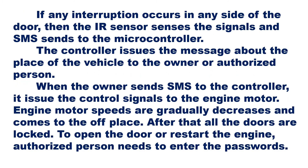If any interruption occurs at any side of the door, the IR sensor senses the signals and sends an SMS to the microcontroller. The controller then issues a message about the place of the vehicle to the owner. When the owner sends an SMS to the controller, it issues the control signal to the engine motor — engine motor speed gradually decreases and comes to the off state. After that, all the doors are locked. To open the door or restart the engine, the authorized person needs to enter the password; otherwise, no unauthorized person can open it.